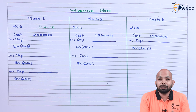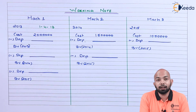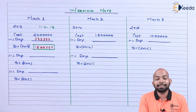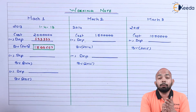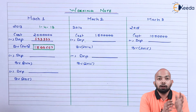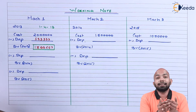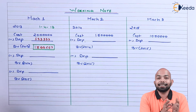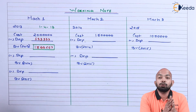The depreciation amount for the 8-month period in 2013 is 1,33,333. Once you subtract that depreciation from the original cost of 20 lakh, that gives you a book value of 18,66,667. That is the book value of that specific asset at the end of the year 2013.